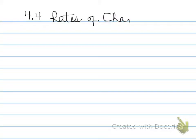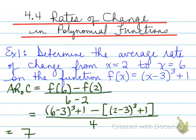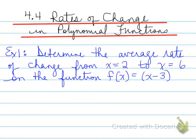All right, last 4.4, rates of change in polynomial functions. Let's look at this example. We're going to move backwards just a little bit and look at the actual question first. The question says, determine the average rate of change from x equals 2 to x equals 6 on the function f(x) equals (x minus 3) cubed plus 1.